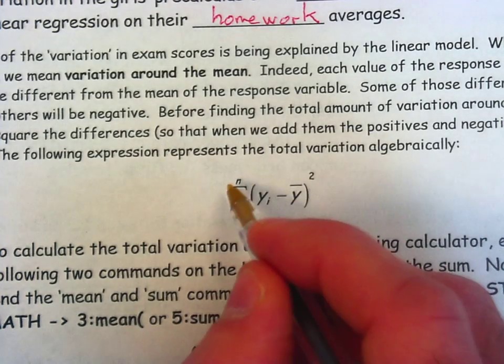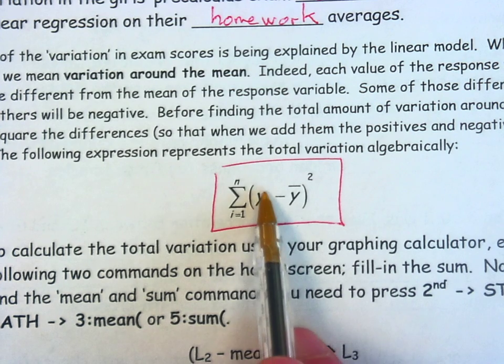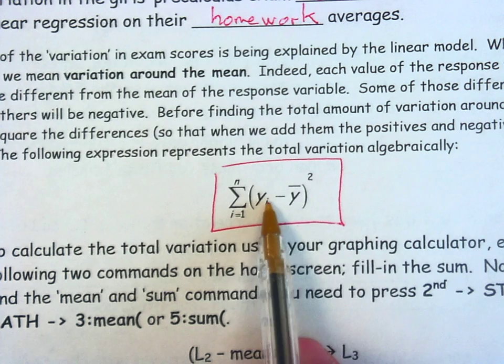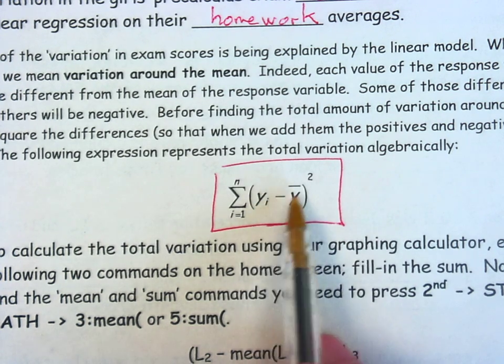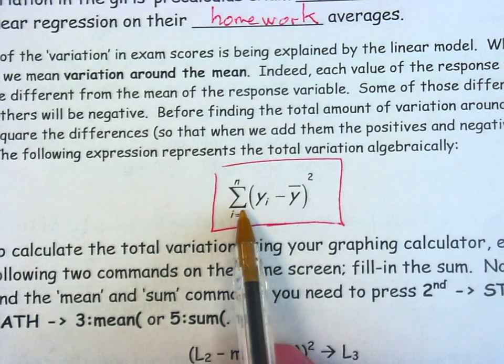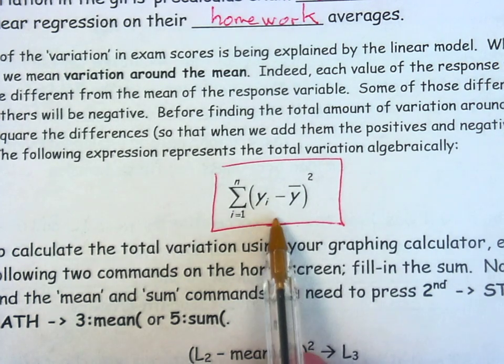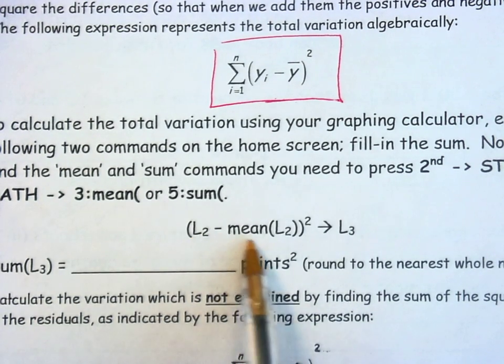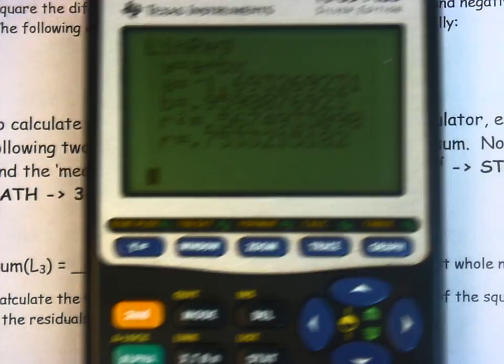Well, this is the total variability in the model. In the response variable, the actual values of y, if we subtract the mean, those are the deviations for all of the different response values. So if we take all of those deviations and square them and add them up, this is what we mean by the total variability in the model, the total variability around the mean. So this is the first thing that we need to calculate, and this is the way to calculate it on the home screen. This is the command that you want to enter.